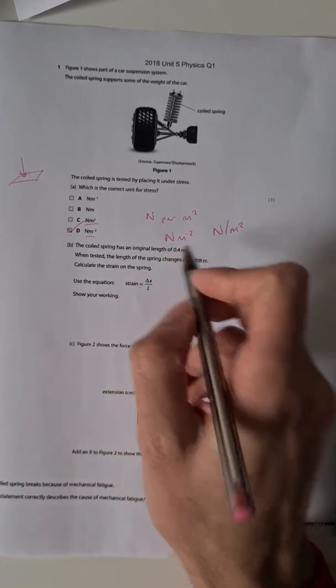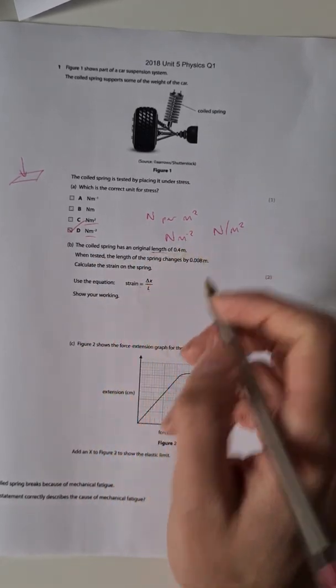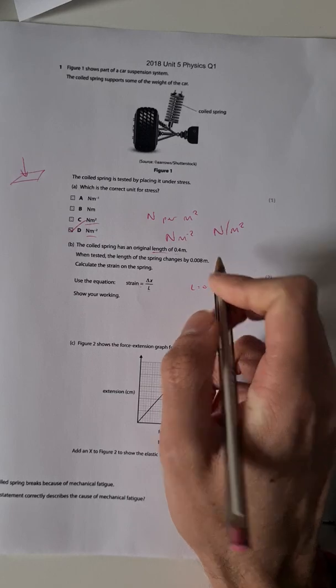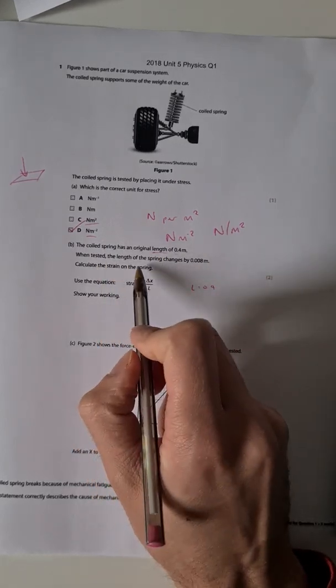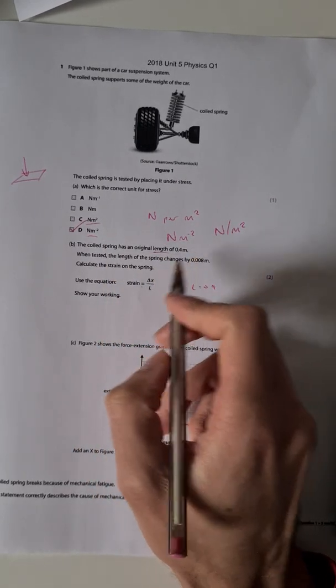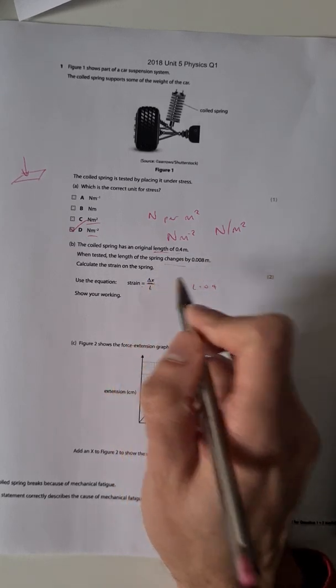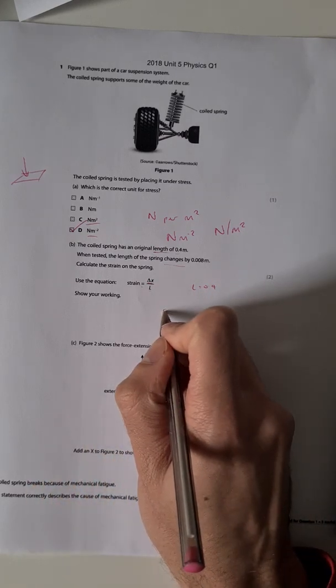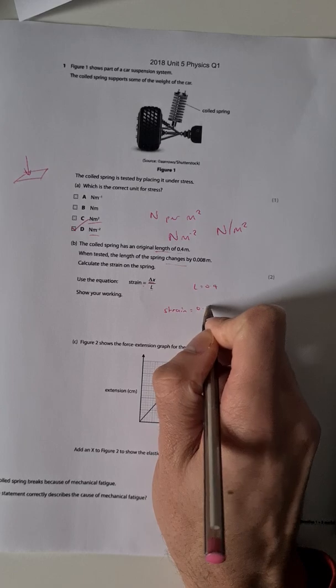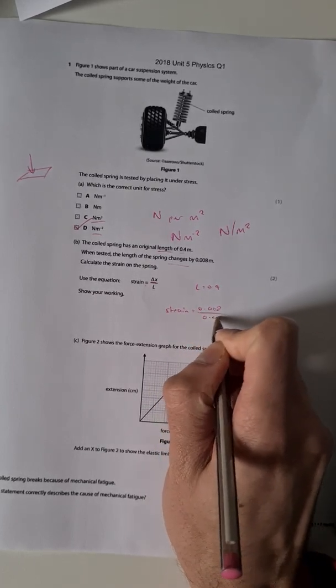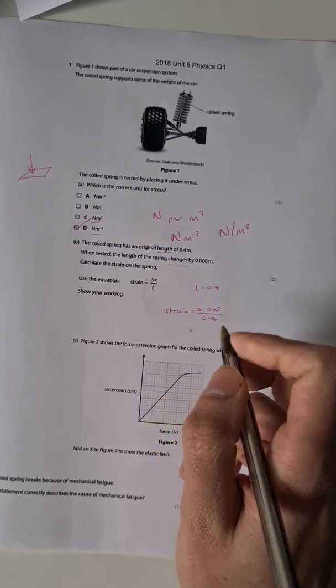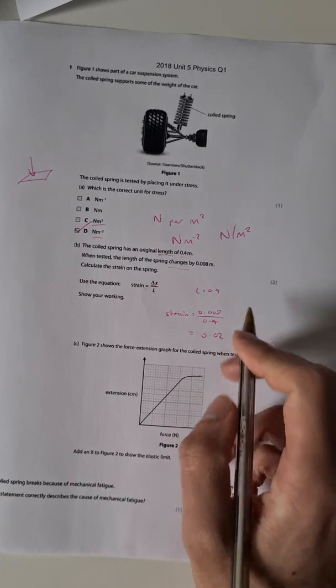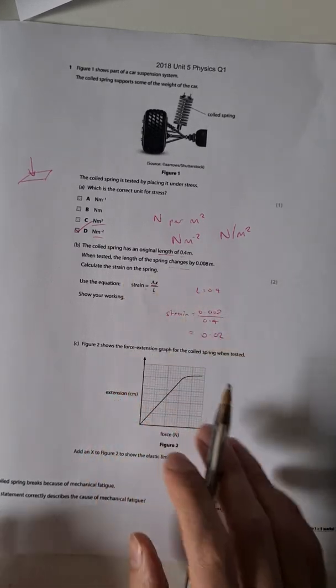So I'm going to go with that as my L, so L equals 0.4. And when tested the length of the spring changes by 0.08. Now we've got a change here and that's what this delta symbol means. So we're going to have strain equal to 0.08 divided by 0.4 which gives us a strain of 0.02. So one mark for the answer, one for showing your working out.